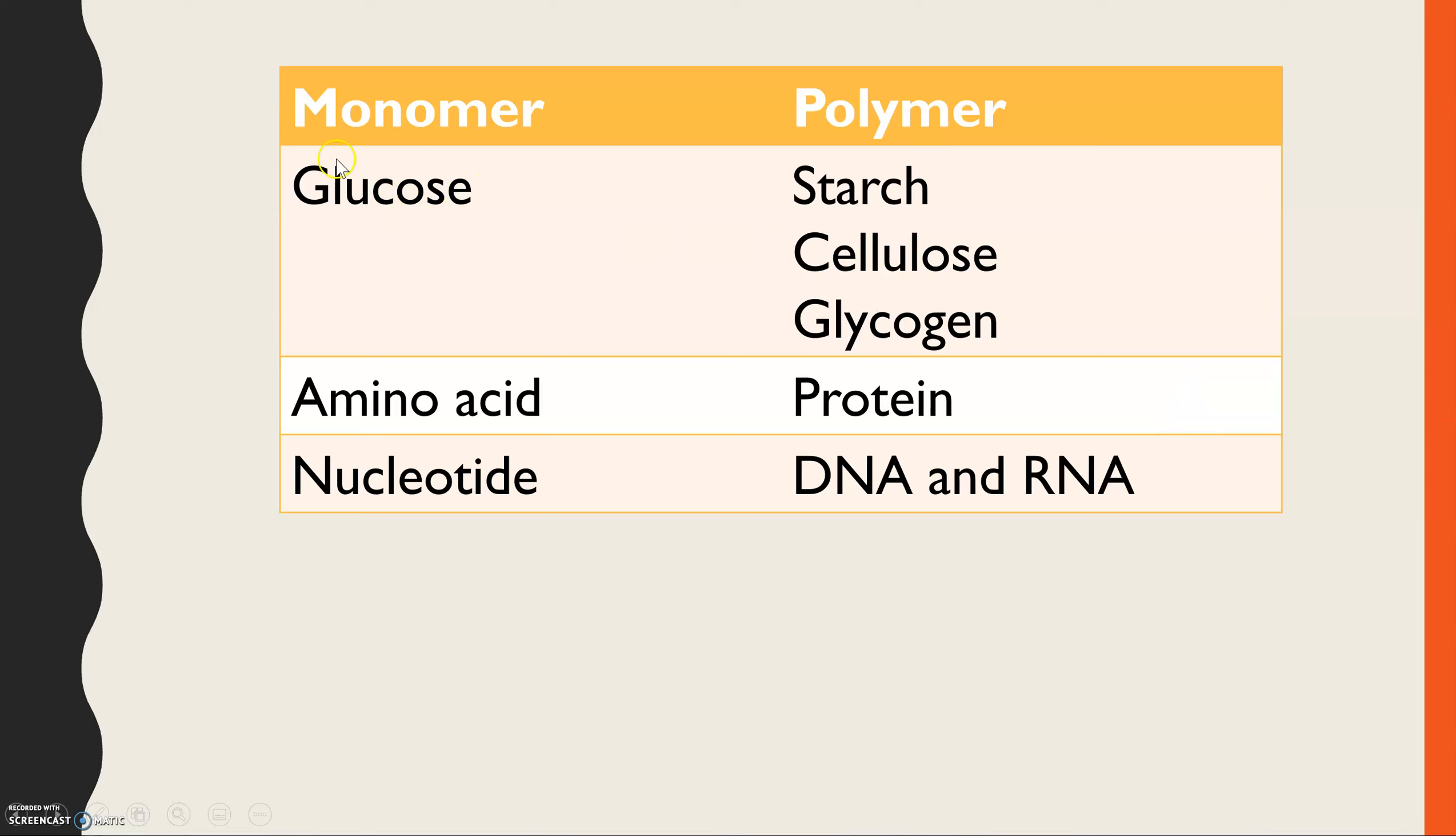Within the carbohydrates, one of the key monomers we'll look at today is glucose. And then later on within this topic, we'll be looking at starch, cellulose, and glycogen as examples of polymers. You'll also come across proteins and the monomer amino acid and DNA and RNA structure, which both have the monomer nucleotides.